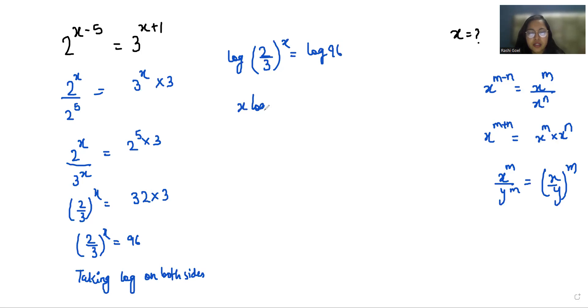We can write this as x log(2/3) equals log 96. Now I'm going to divide with log(2/3) on both sides.